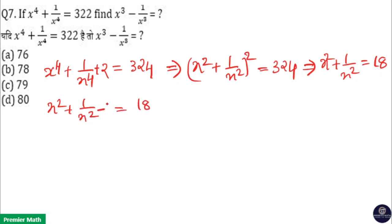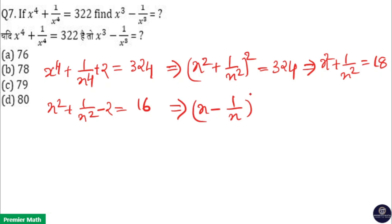If x squared plus 1 by x squared is 18, and I subtract 2 here, 18 becomes 16. That means x minus 1 by x, the whole square, is 16. So x minus 1 by x is 4.